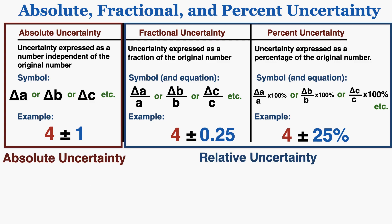In comparison to absolute uncertainty, we call fractional and percent uncertainty relative uncertainty, because the value of the uncertainty is relative to the value of the measurement. With absolute uncertainty, even if I don't know what the measurement is, I can still understand the exact size of the uncertainty — it's just plus or minus 1, independent of any other number. But for fractional and percent uncertainty, if I can't see the original measurement, I don't actually know how large it is. 25% of 1 is a very different size of uncertainty compared to 25% of 100.